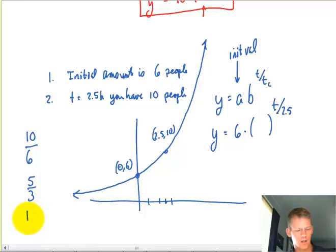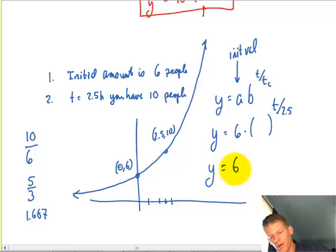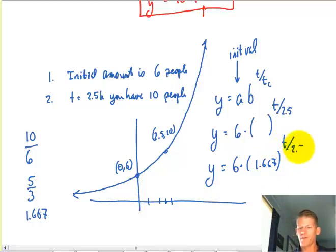So 10 divided by 6 is 5 divided by 3. Or you could say 1.667, if you would, because that would be 1 and 2 thirds. So then your exponential model will be 6 times 1.667 to the T over 2.5.